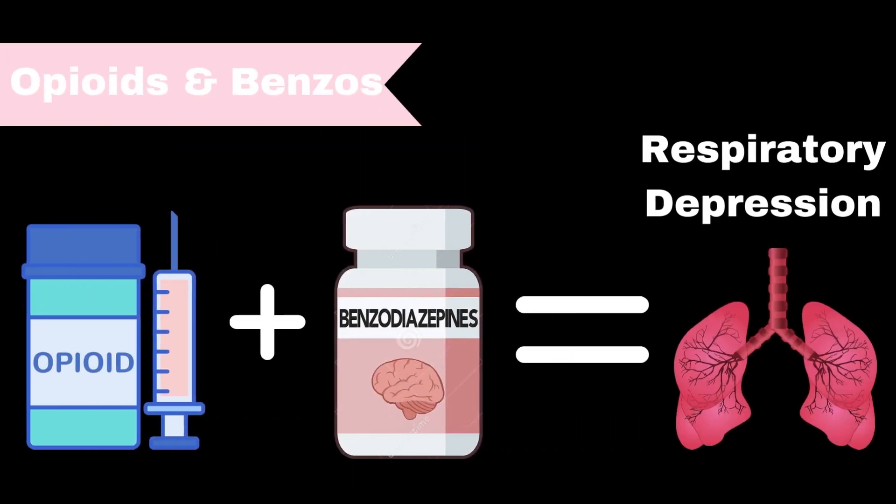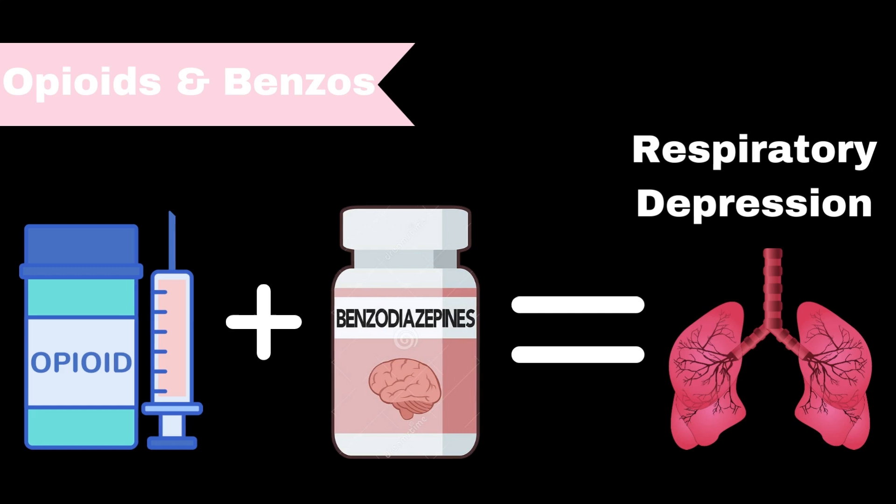A major drug-drug interaction that is high yield on the NAPLEX is the interaction between opioids and benzodiazepines. When given together, these could lead to life-threatening respiratory depression, therefore you want to be very cautious with these medications.